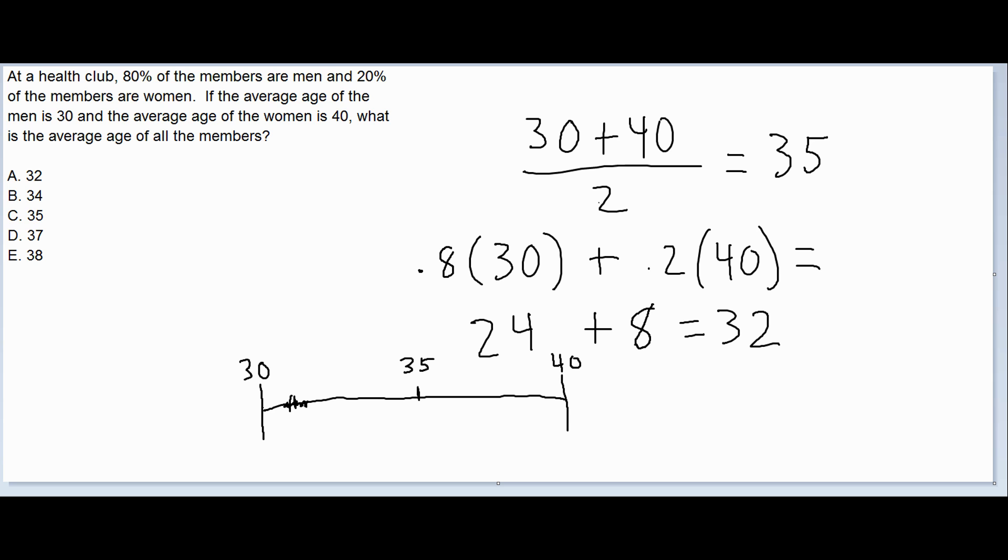So specifically, it's going to pull it 20% of the way toward the women's average because 20% of the group are women. So the distance from 30 to 40 is 10. And so if the women are pulling the average 20% toward their average, that's 20% of 10 is 2. So it's going to pull it 2 in this direction to an average of 32 like we got before.